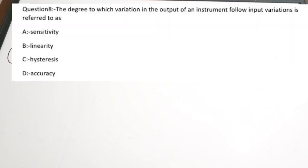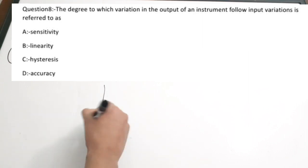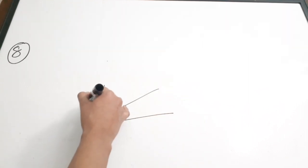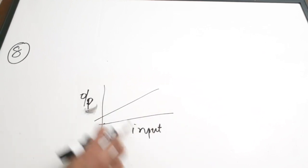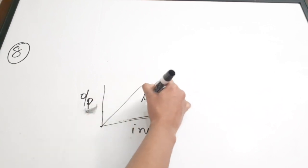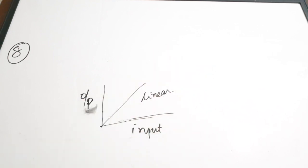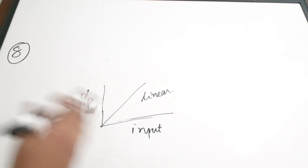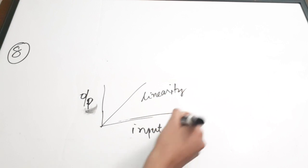Eighth question: the degree to which variation in the output of an instrument follows the input variation is referred to as dash. Options: A) sensitivity, B) linearity, C) hysteresis, D) accuracy. When input varies and the output varies correspondingly in proportion, that property is called linearity. Correct answer is option B — linearity.